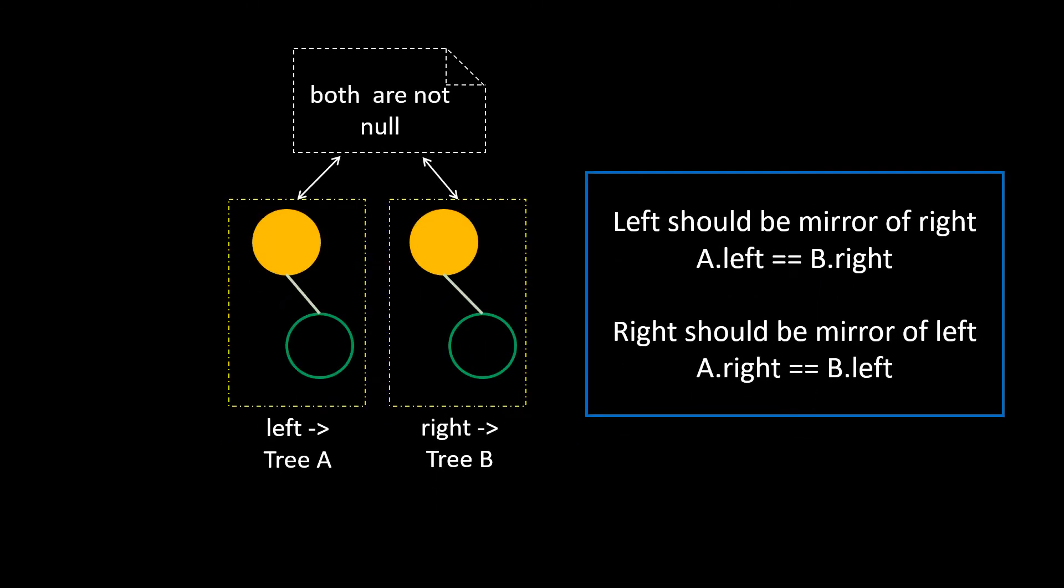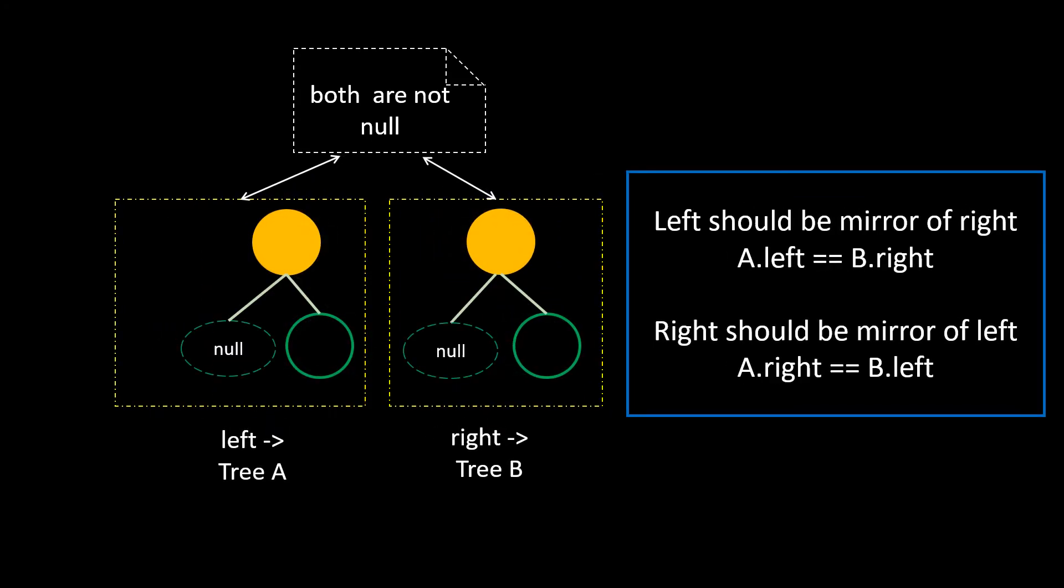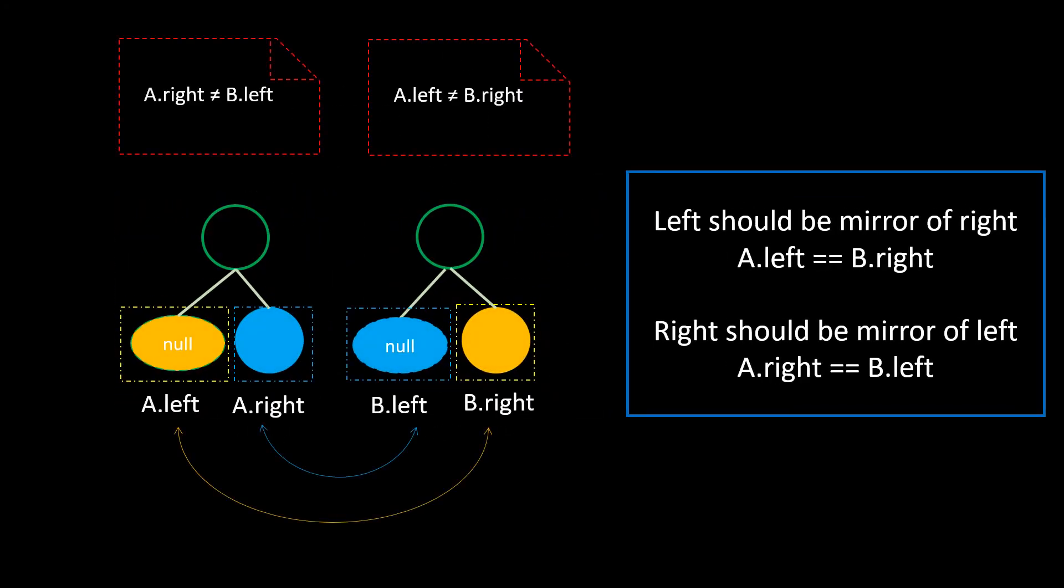If we look at these nodes, they are not null, so they are structurally equal. Hence, we can move ahead. Let's look into its child and write the null nodes also. We need to follow comparison rules. A dot left equals B dot right and A dot right equals B dot left. Here, we see that these are not equal. So, the answer to is this tree symmetrical is false.